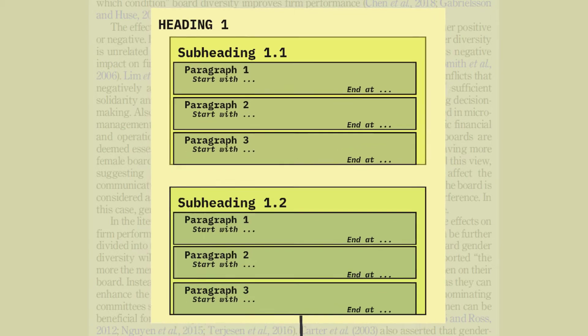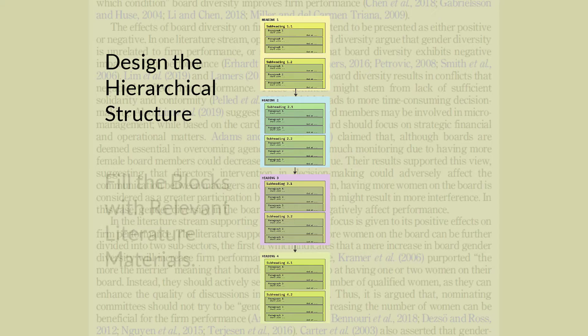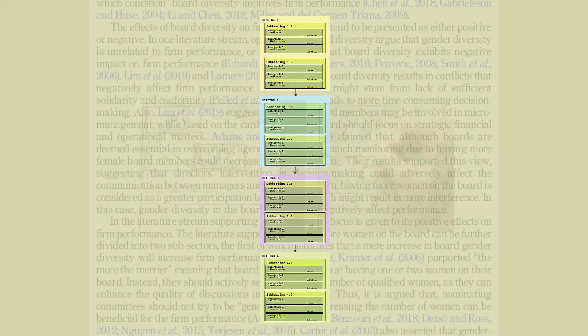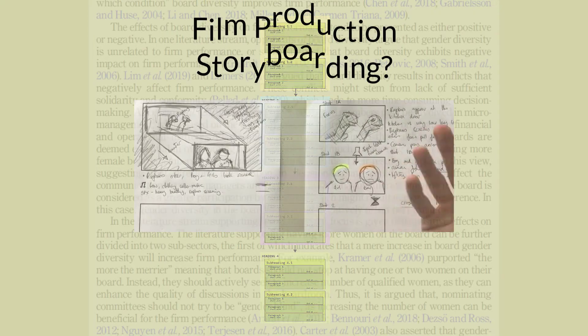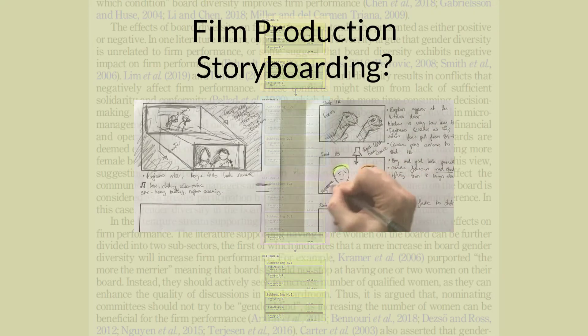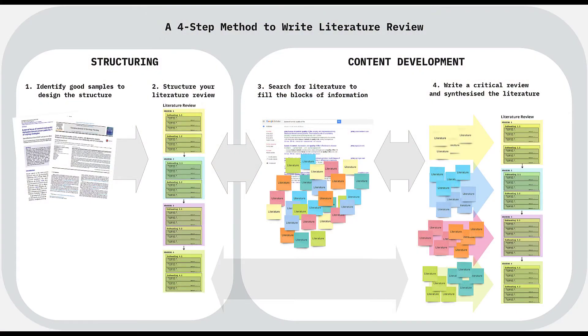The first step is to design the hierarchical structure. Finally, you need to fill these blocks with relevant literature materials. Doesn't this approach look like storyboarding for film production? Let's examine this method more closely.